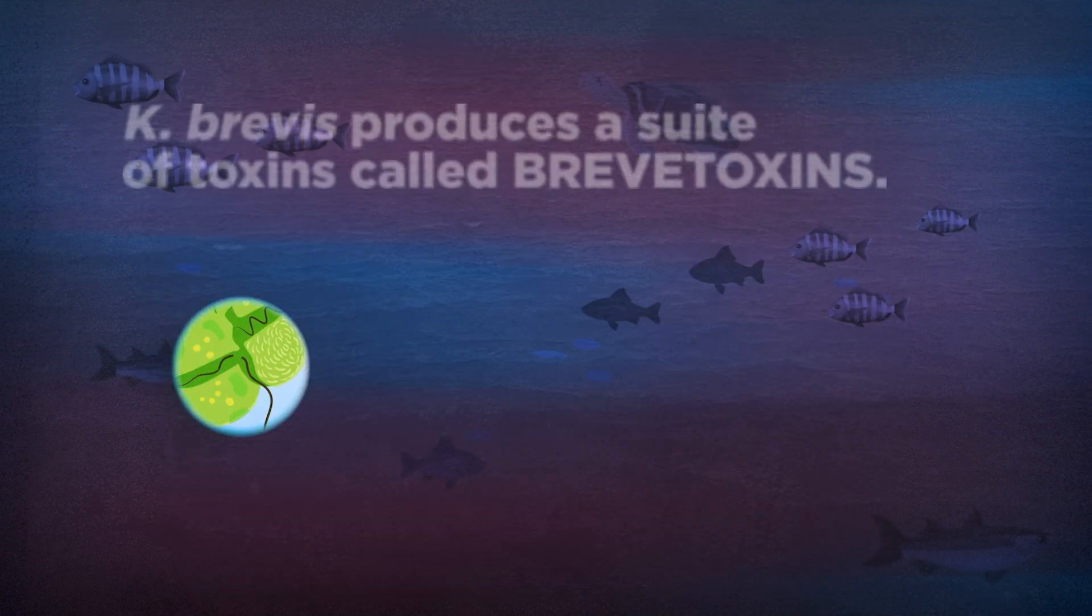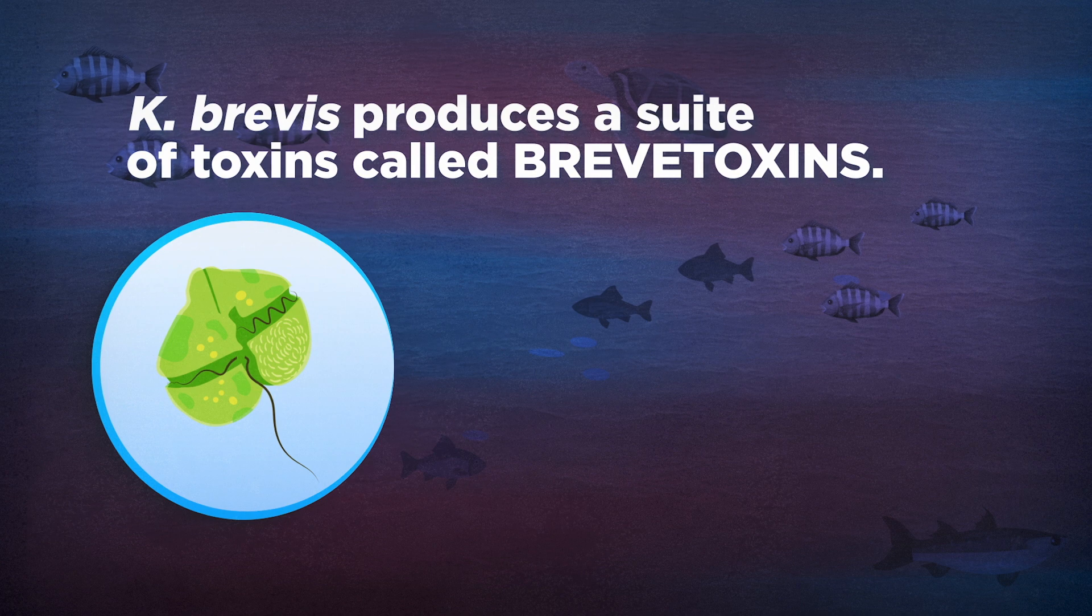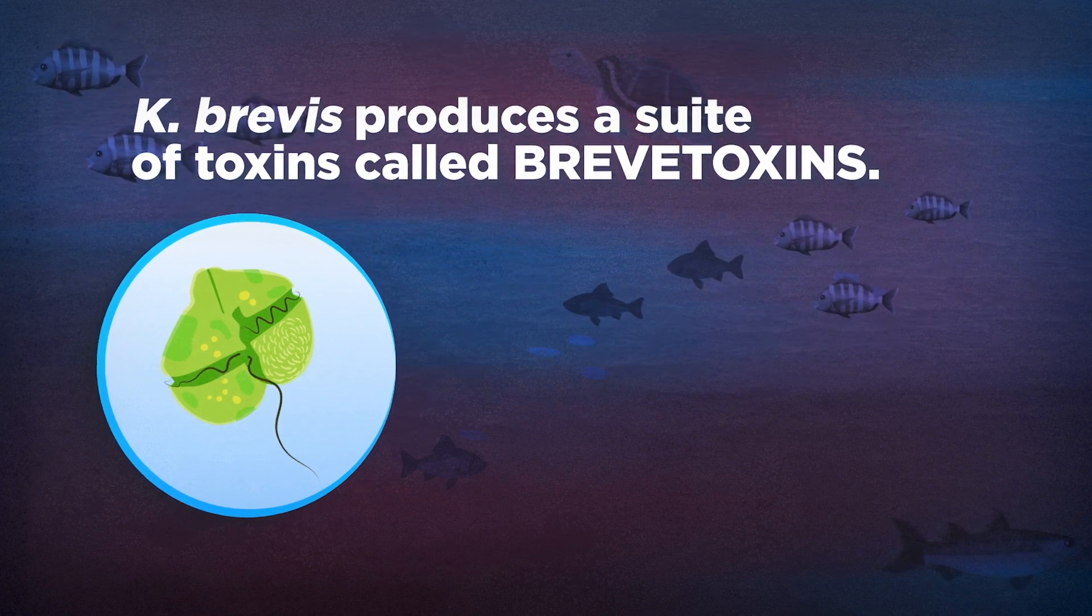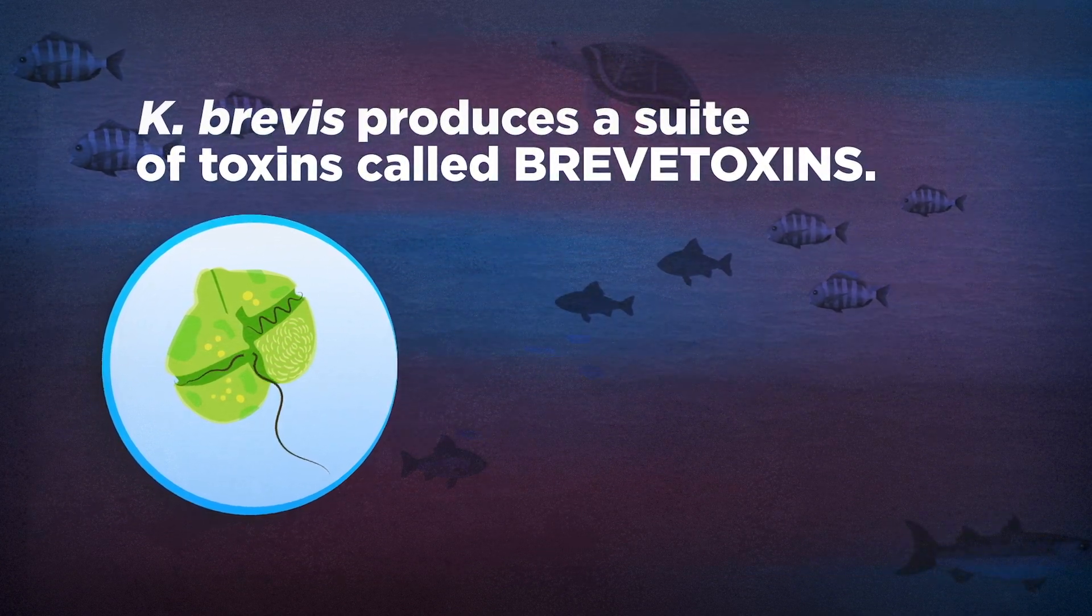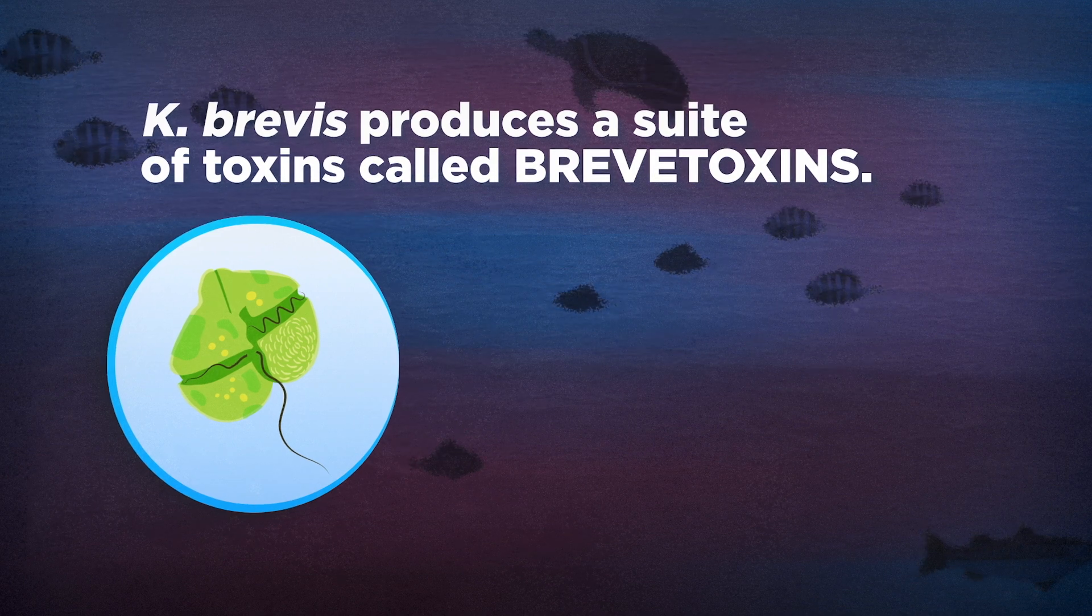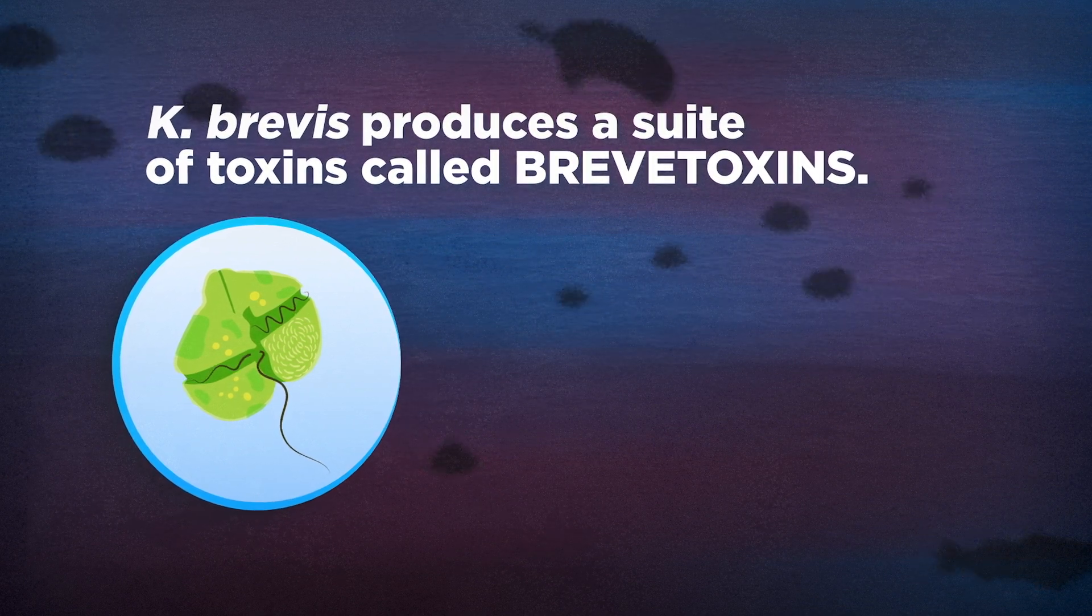Karenia brevis produces a suite of toxins called brevitoxins that can affect the central nervous system of fish and other marine life such as seabirds, sea turtles and marine mammals, causing these animals to become sick and die.